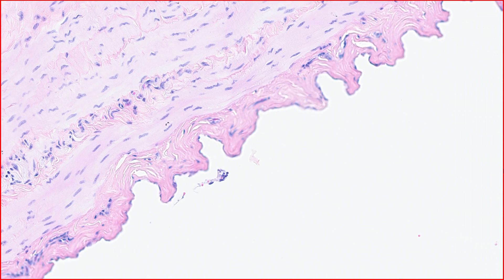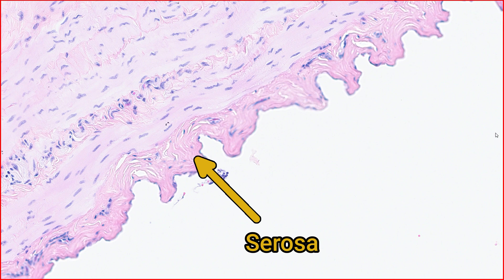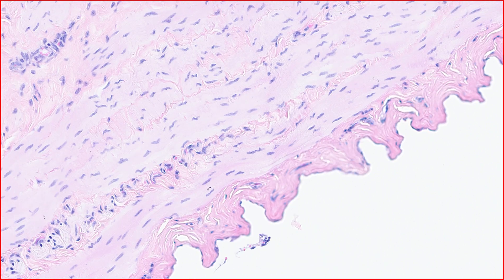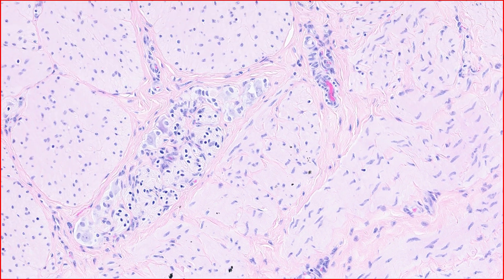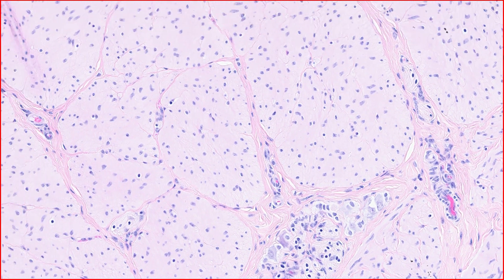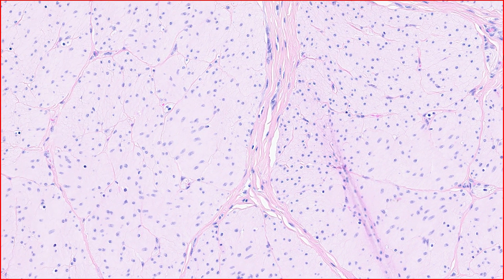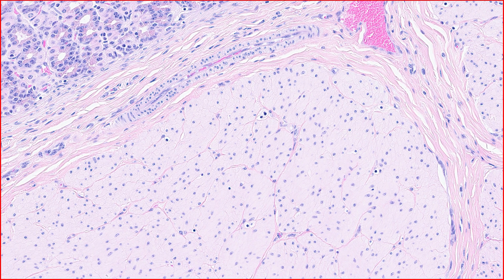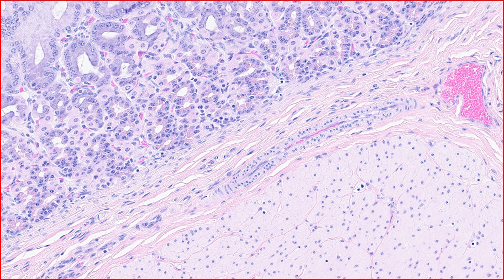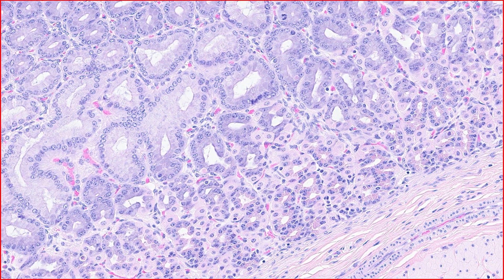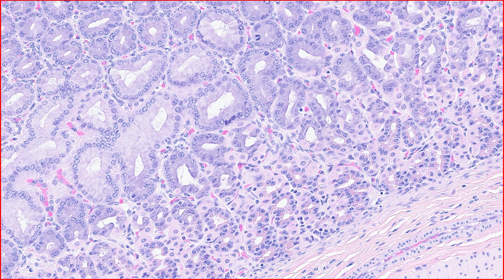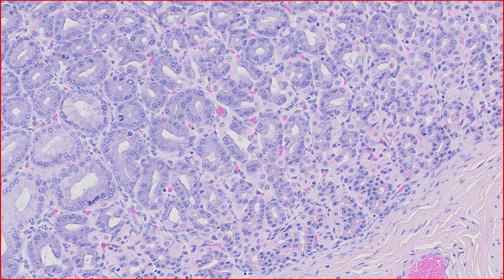Finally there's the serosa, which at higher magnification is this thin layer of connective tissue covered by flat squamous epithelial cells which line the external surface of the organ. So there you have it — those are the main histologic features of the stomach from inside to out. Remember the different layers, where they start and stop, as well as the different cell types of the epithelium. I hope you found this video useful; if you have any questions why not ask them in the comments. Thanks for watching and until next time, goodbye.